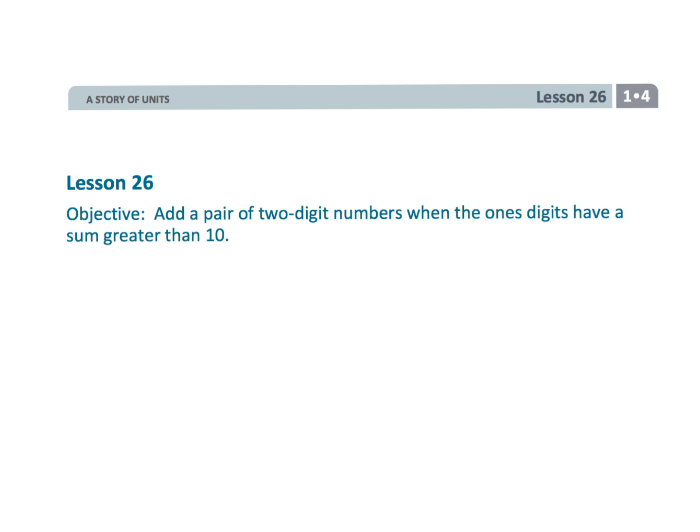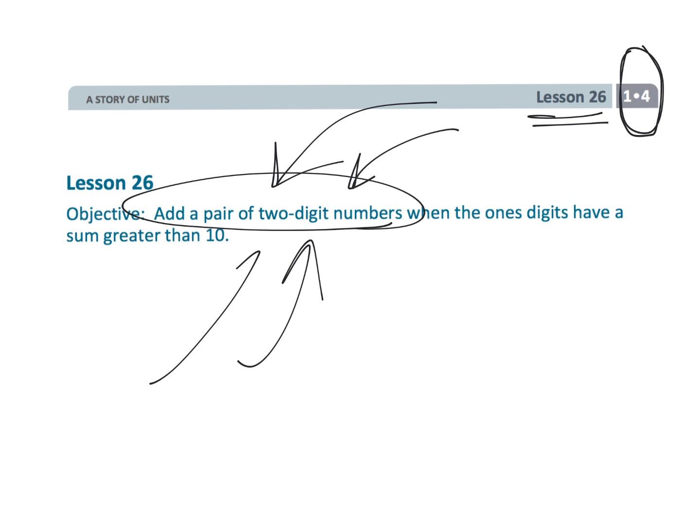So parents and teachers, that was lesson 26, grade 1, module 4, where we're not using standard algorithms. We are adding two two-digit numbers, but we're using strategies that involve number sense rather than just following the standard algorithm. Because at this point, we're trying to get students to understand the numbers involved rather than just blindly follow a rule.